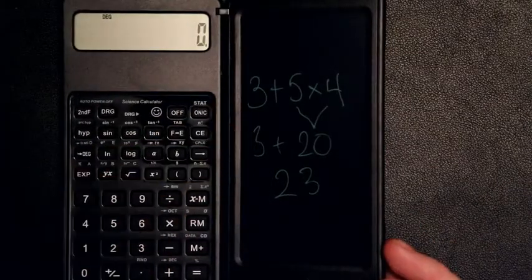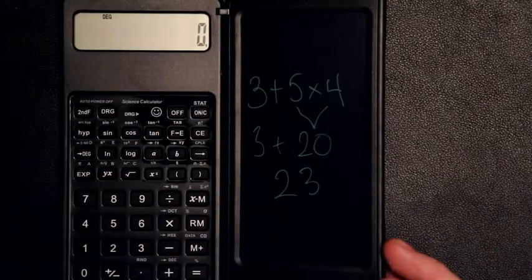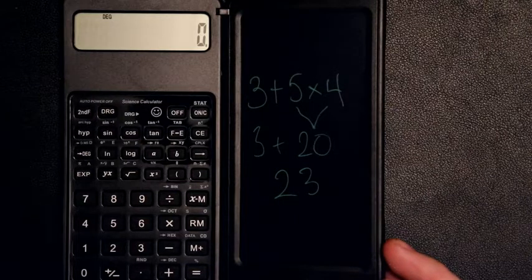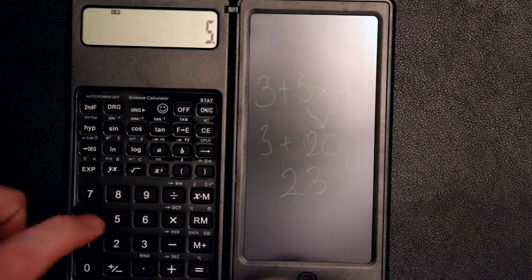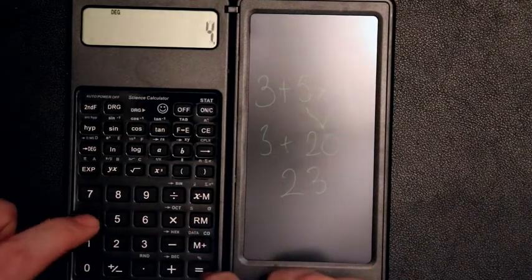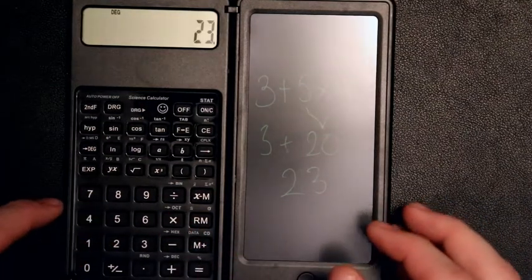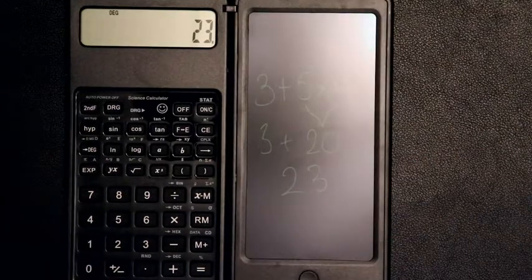So if we type that in just like so, we'll know that this calculator is capable of following the order of operations. So 3 plus 5 times 4 equals 23. So there you go, it actually does follow the order of operations.